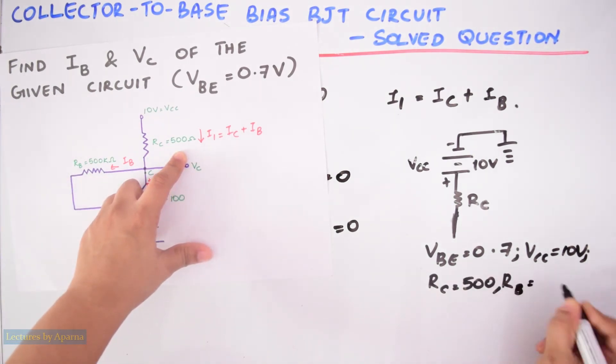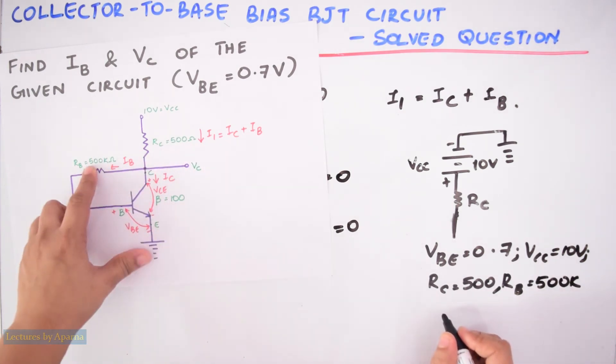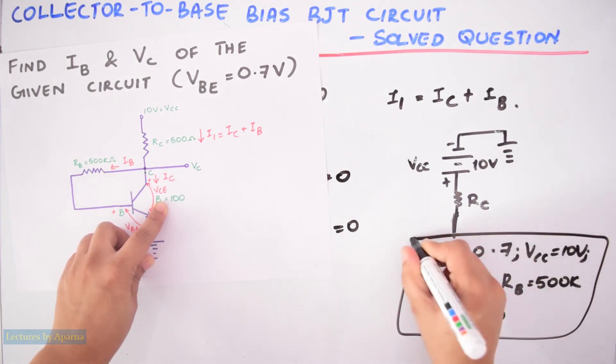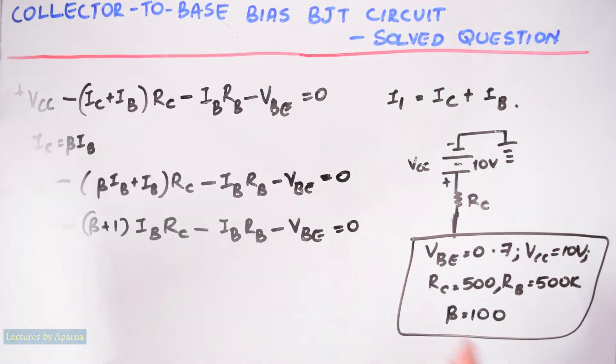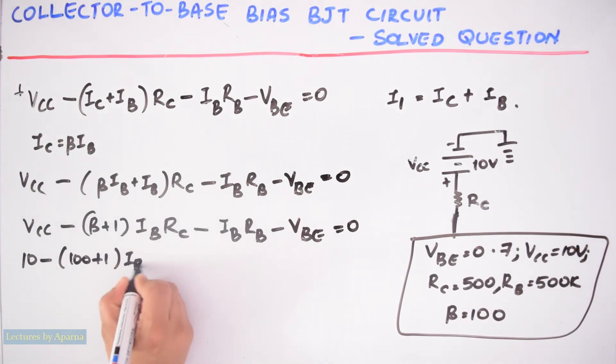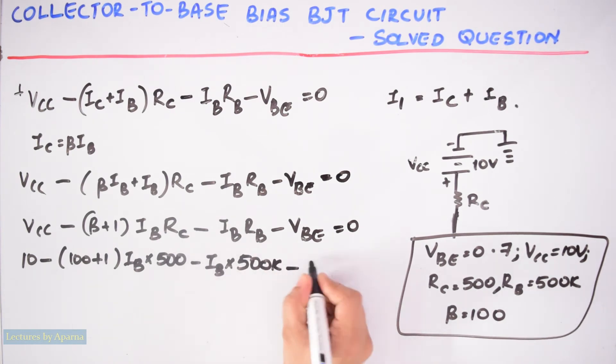RB equal to 500k and beta equal to 100. Now we have to substitute these values in this equation. So we can write it as VCC is 10 minus (beta is 100 plus 1) IB into RC is 500 minus IB into RB is 500k minus VBE is 0.7 equal to 0.